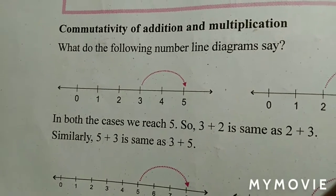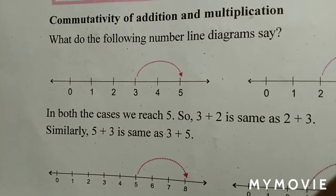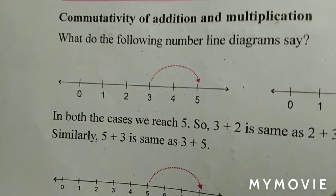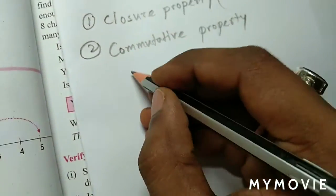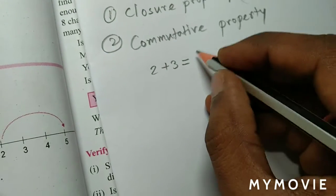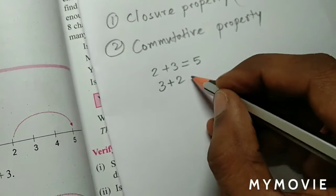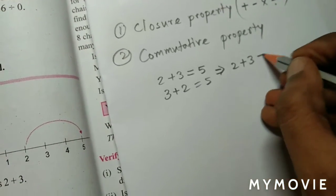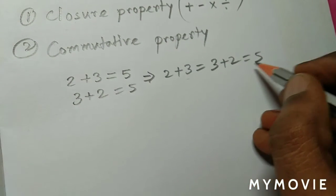अब हम discuss करेंगे about the commutative property of addition and multiplication. Addition की time में commutative property होता है के नहीं — suppose 2 के साथ 3 addition किया तो answer आया 5, और अगर 3 के साथ 2 addition करूं तो भी 5 आया। So we can say that 2 plus 3 is equal to 3 plus 2 is equal to 5. This is the commutative property for addition.